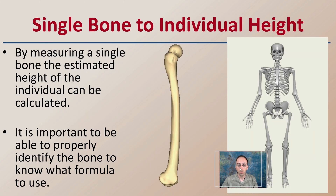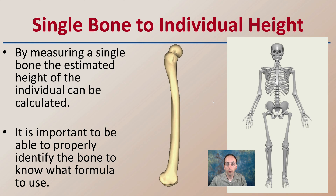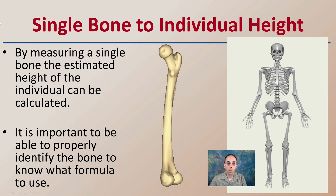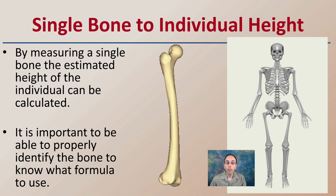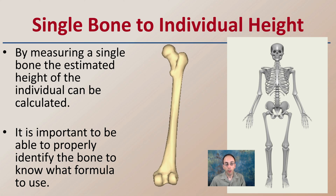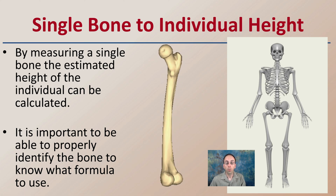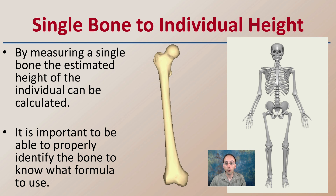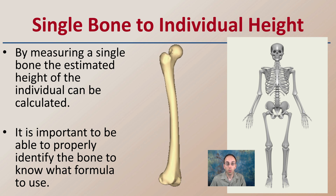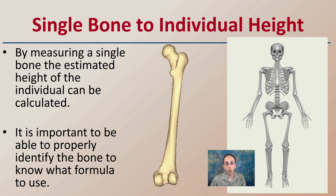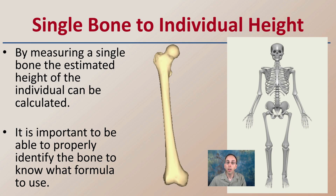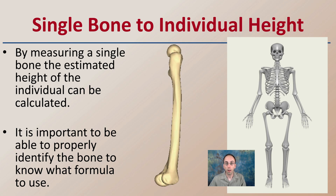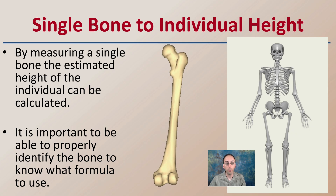Here we're looking at a single bone to individual height. By measuring a single bone, the estimated height of the individual can be calculated. It's important to properly identify the bone and know the correct formula to use, because you can't just pick any bone. There are certain key ones that have formulas developed so you can get a closer estimation of the height of the individual.